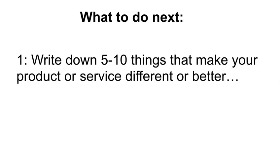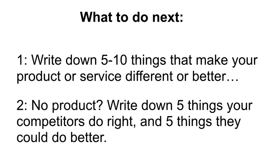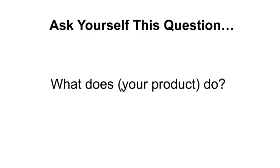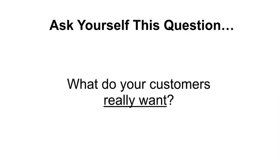Here is what I would like you to do next. Write down five to ten things that make your product or service different or better than your competitors. If you don't have a product yet or you're in the process of creating one, write down five things your competitors do right and five things you would do differently and better. Once you have your list, ask yourself: What does — fill in the blank — your product or service do? Write your answer in one single sentence. Then ask a second question: What do your customers really want? Put your answer in one single sentence and boil it down to the most core desire — what is the reason they're buying your product? What is the ultimate benefit they are after? What you'll find is that your two answers should be the same, because your unique angle should directly hit the bullseye on what your customers want the most. If they're not the same, that's an issue we need to address.